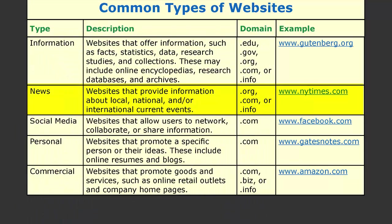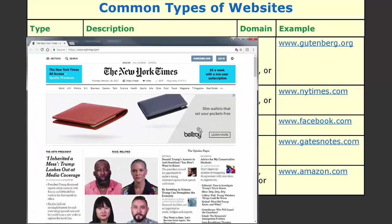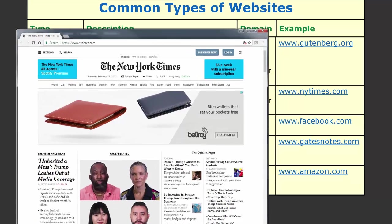Other websites focus on providing news. They provide information about local, national, and/or international current events. Typical domains include .org, .com, or .info. One example is www.nytimes.com.